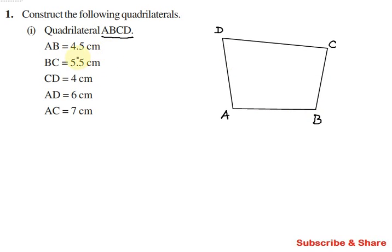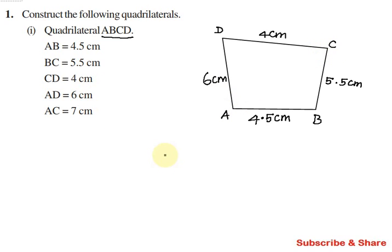We have to mark the given measurements. AB is equal to 4.5 cm. BC is 5.5 cm. CD is equal to 4 cm. AD is equal to 6 cm. And AC — from point A to C — is 7 cm. So we have to connect A and C, because the AC distance is given. This is 7 cm. This is the rough diagram.